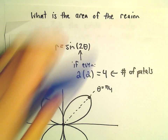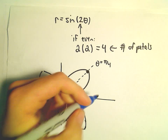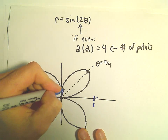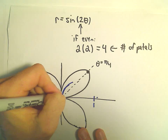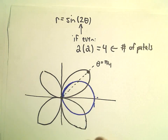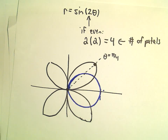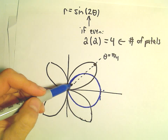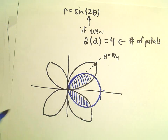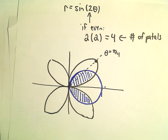r equals cosine theta is just a circle going out to a distance of 1 on the x-axis. Now what we're trying to do is find the area inside both curves — this little area and this little area, which should be symmetric based on the symmetry of our curves.